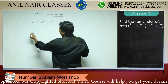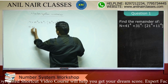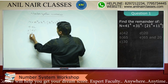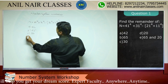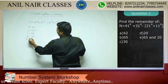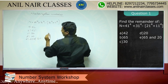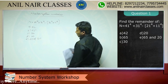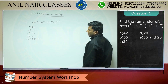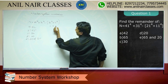What we will do is play with the options: 42, 65, 30, 20 — 65 and 20. The best way to solve this question is to apply the Chinese Remainder Theorem.